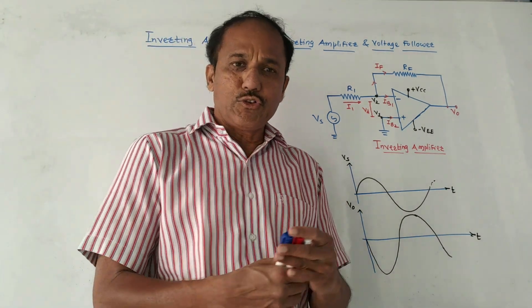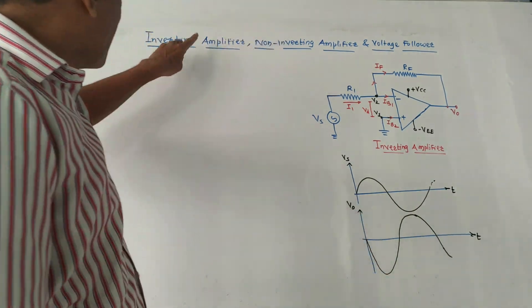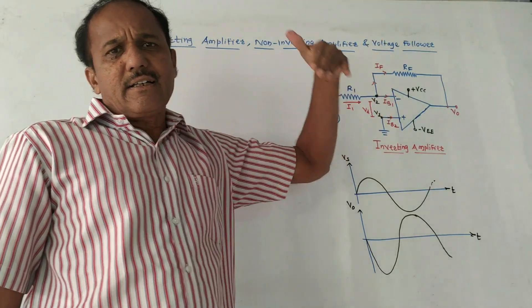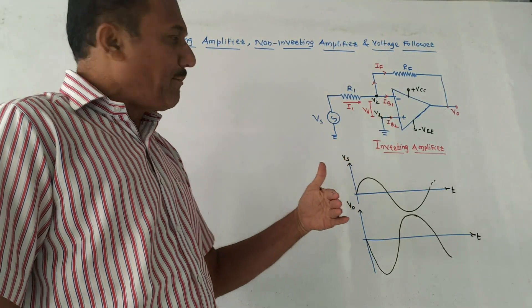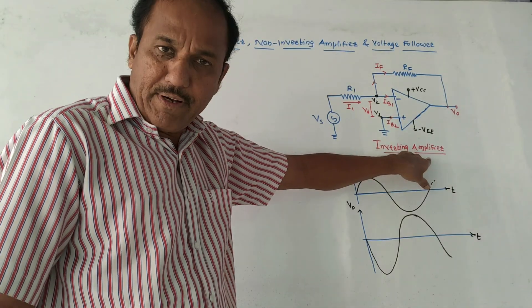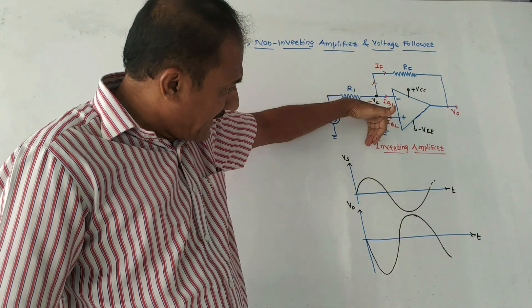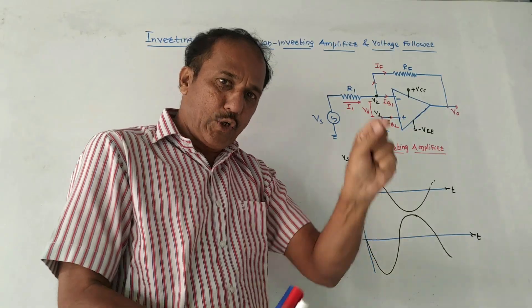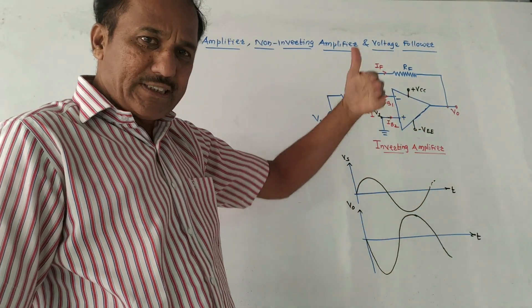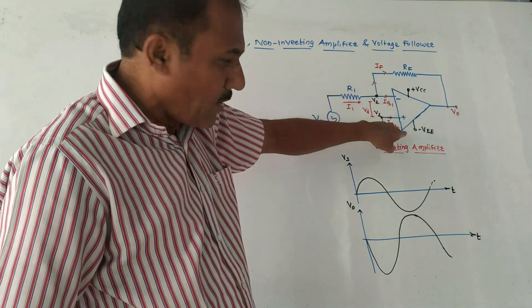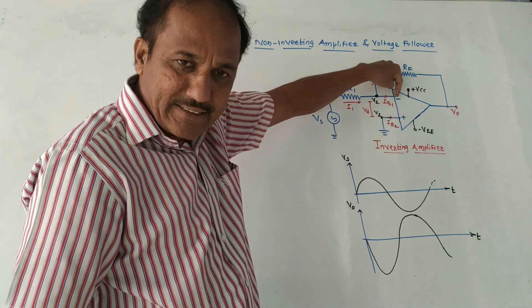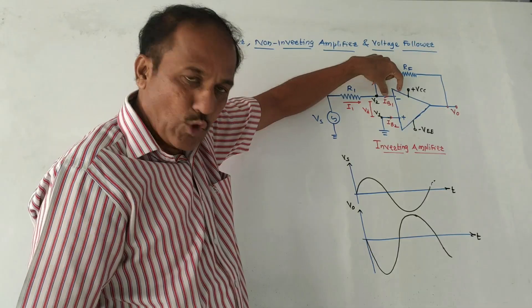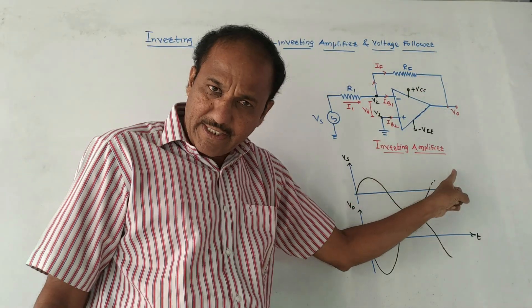Hello and welcome, dear students. This topic covers inverting amplifier, non-inverting amplifier, and voltage follower — these are certain applications of the operational amplifier. Let us first discuss the inverting amplifier. As the name indicates, the input voltage to be amplified must be applied to the inverting terminal of the op-amp. There are two input terminals: one marked negative and one marked positive.